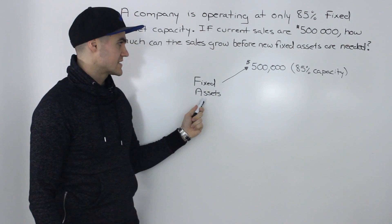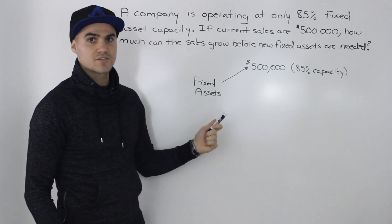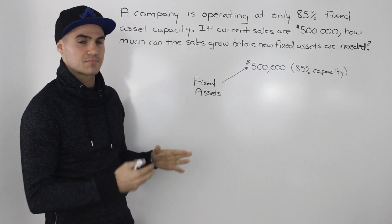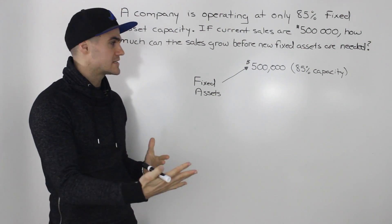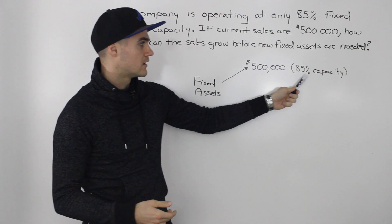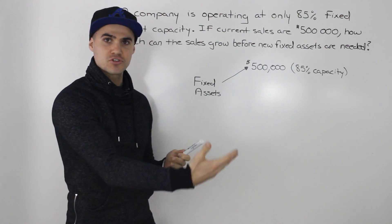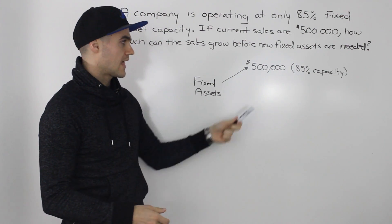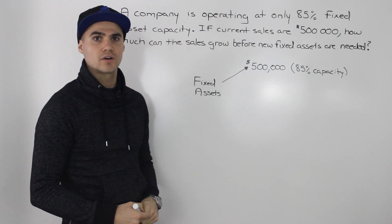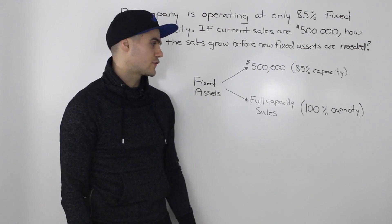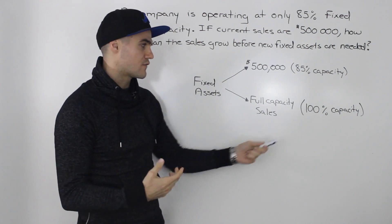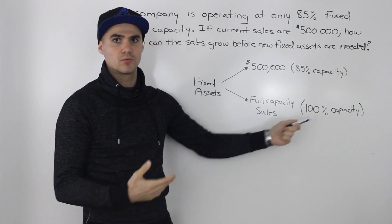You have a bunch of fixed assets that are producing sales for you. I like to think of the fixed assets as maybe like a house or a building that you're renting out. Currently, this building is only renting out 85% of the rooms and it's generating $500,000 worth of sales. We need to figure out what the full capacity sales are — what would the sales be if 100% of the building were rented out?